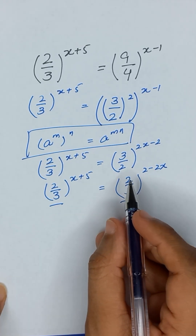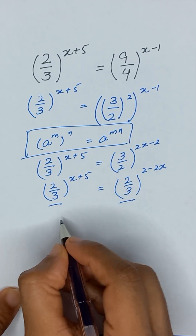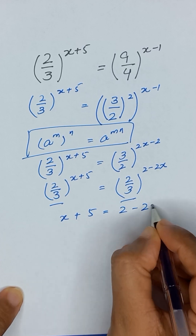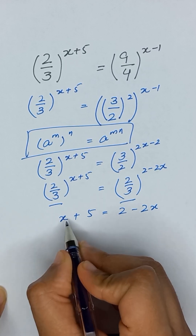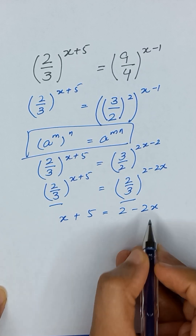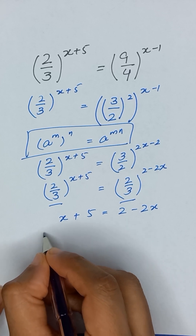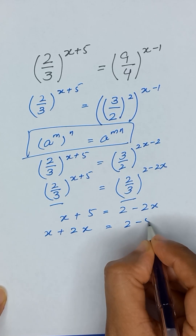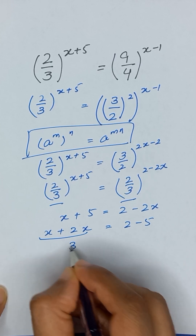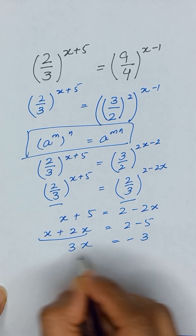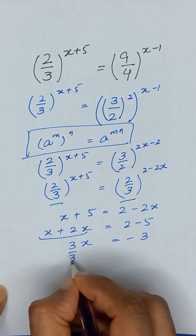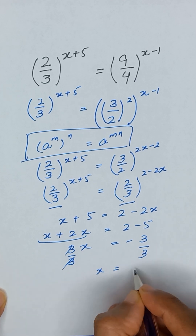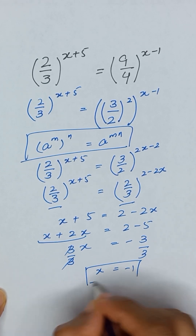The bases are the same, so we can equate the powers: x plus 5 is equal to 2 minus 2x. Taking 2x to the left and 5 to the right gives x plus 2x equals 2 minus 5, so 3x equals minus 3. Dividing both sides by 3, the value of x is equal to minus 1. Thanks for watching.